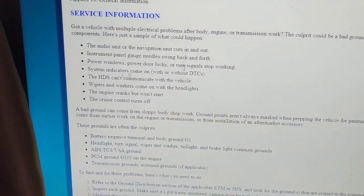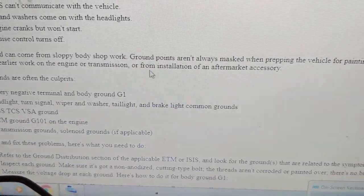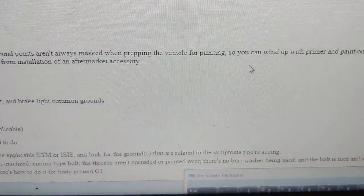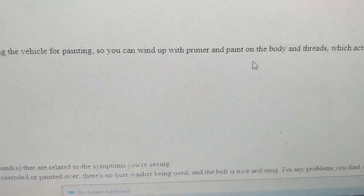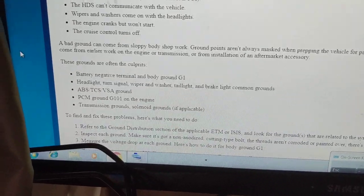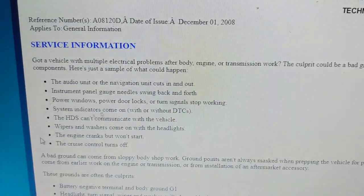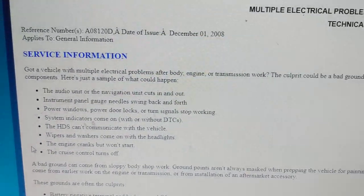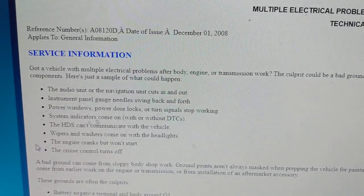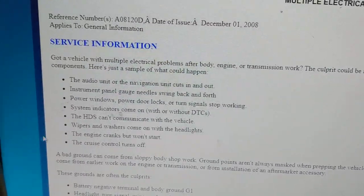Where else are you going to find all this? Get the schematic and service bulletin. A bad ground can come from sloppy body shop work — ground points aren't always masked when prepping the vehicle for painting, so you can wind up with primer and paint on the body, and paint is not a conductor. If somebody puts in a radio or alarm system, that's when you get battery drains the next morning — not because the battery is weak, but because of sloppy work.